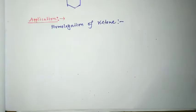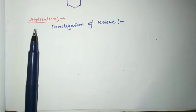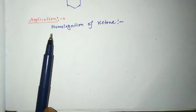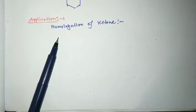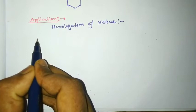This gives the carbonyl compound, that is cyclohexanone. Now we see the application of this mechanism. This rearrangement is used for homologation of ketones — meaning we can convert a five-membered ketone to a six-membered ketone, or a four-membered ketone to a five-membered ketone. Let's take an example.